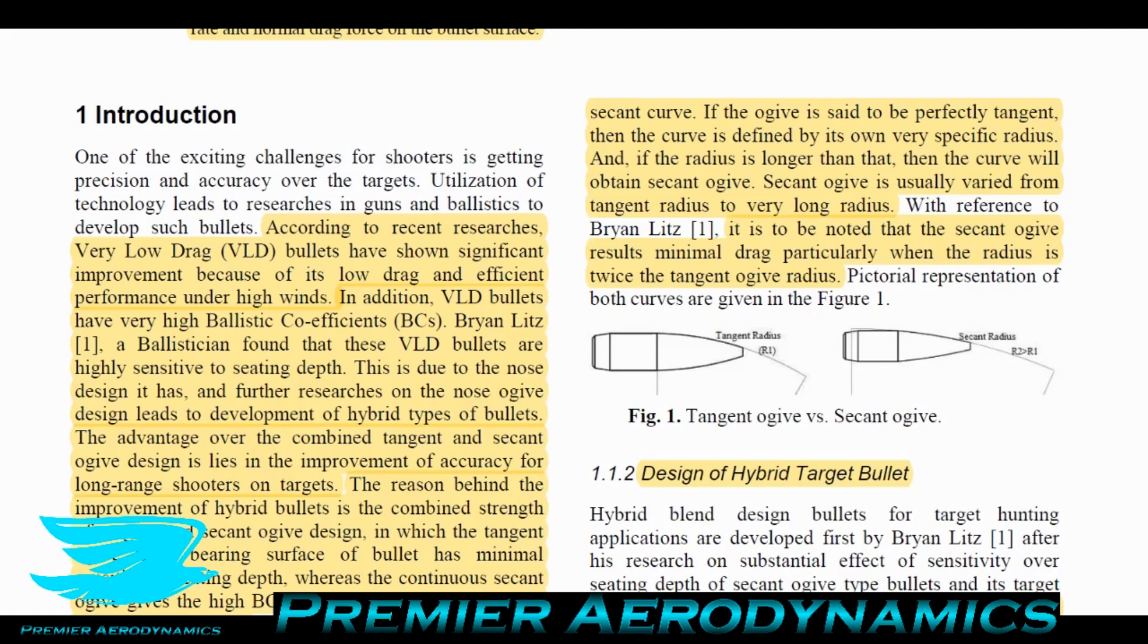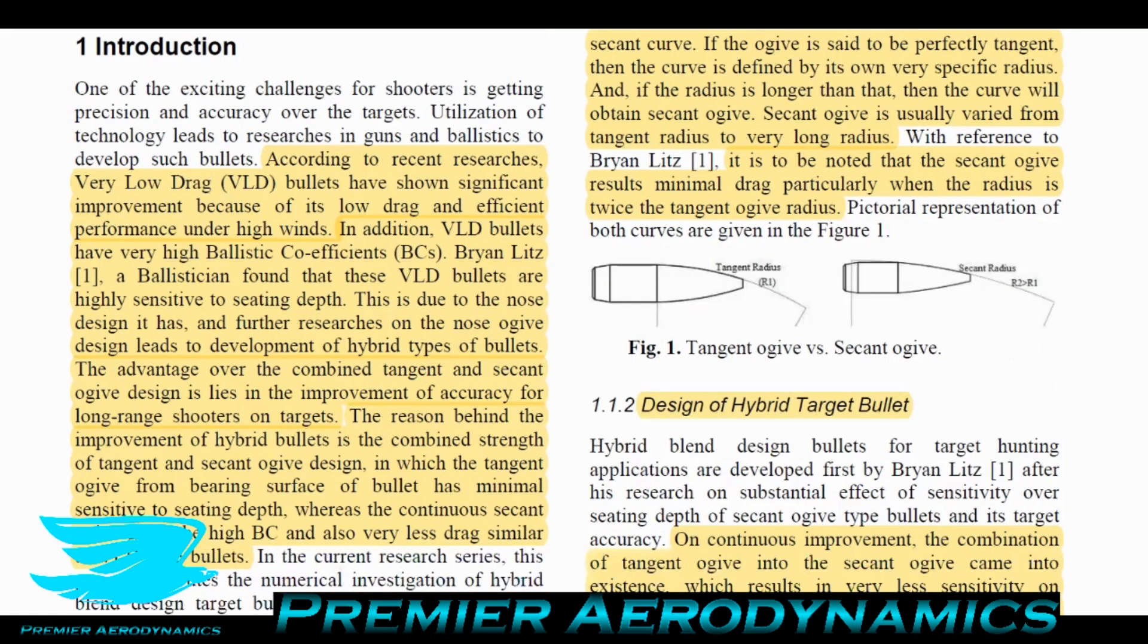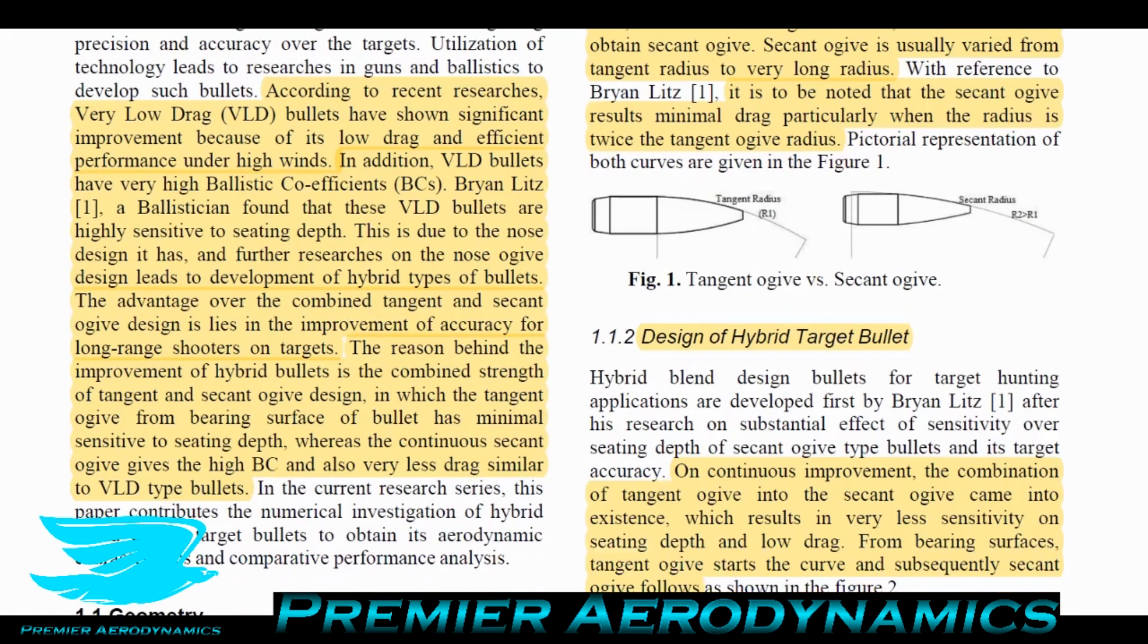Further research on the nose ogive design led to the development of hybrid types of bullets. The advantage of the combined tangent and secant ogive design lies in the improvement of accuracy for long range shooters. The tangent ogive from the bearing surface has minimal sensitivity to seating depth, whereas the continuous secant ogive gives high ballistic coefficient and very low drag. Blending the two gives a much more aerodynamic bullet.